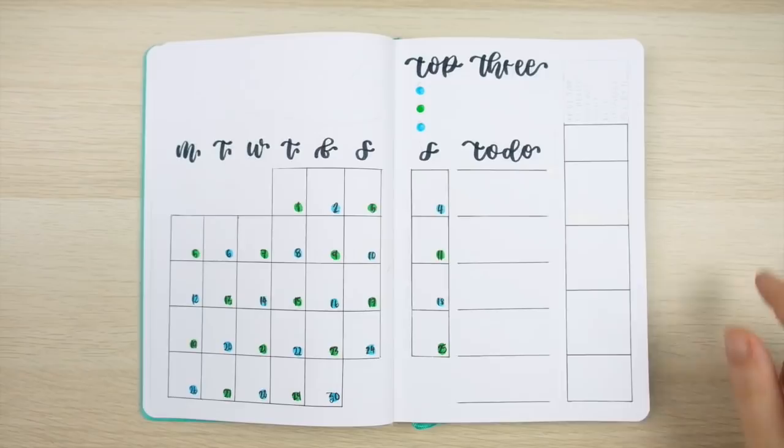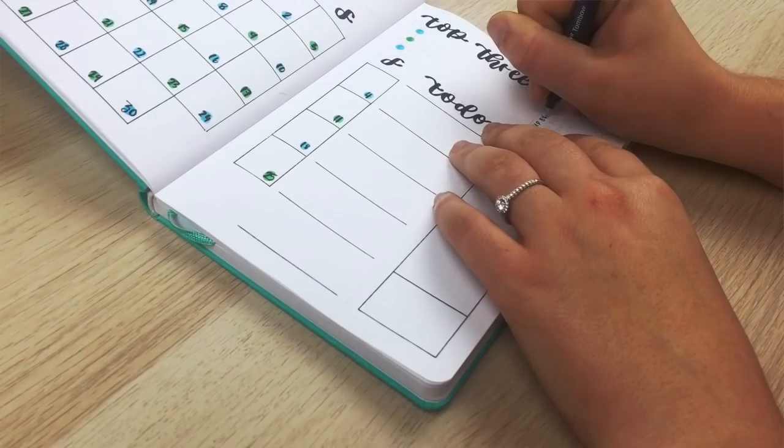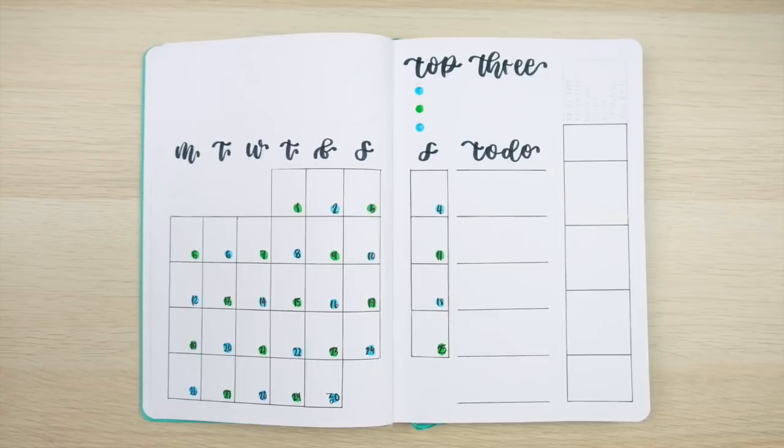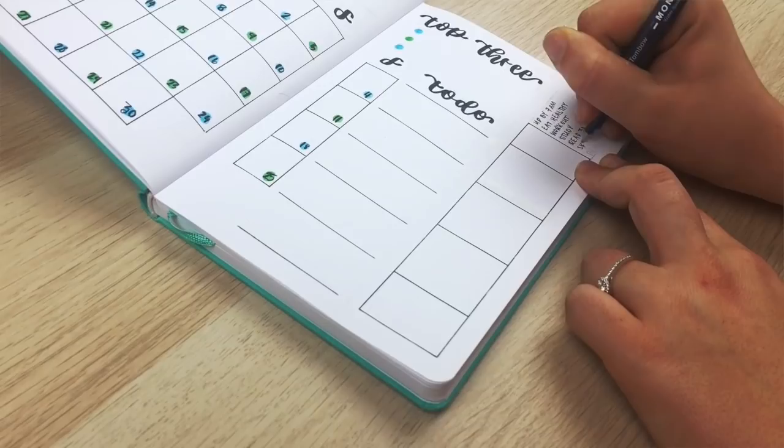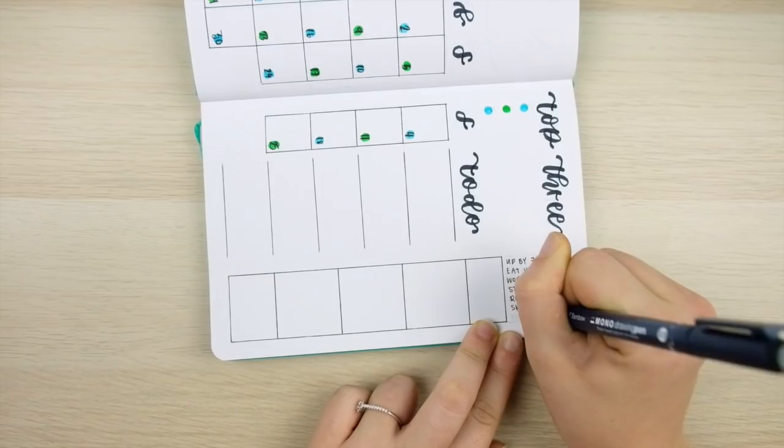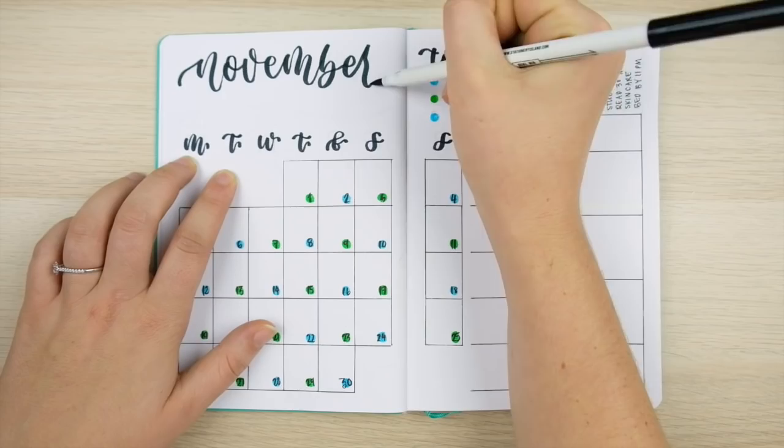Now I'm going to use the remaining blank space on the right side for a monthly habit tracker. And here I made this tracker seven spaces wide to fit seven habits, but if you have more or fewer habits than this you can always change the width to accommodate that. I think that this is a really great option for those of you who don't have so many habits that they need their own full spread habit tracker.